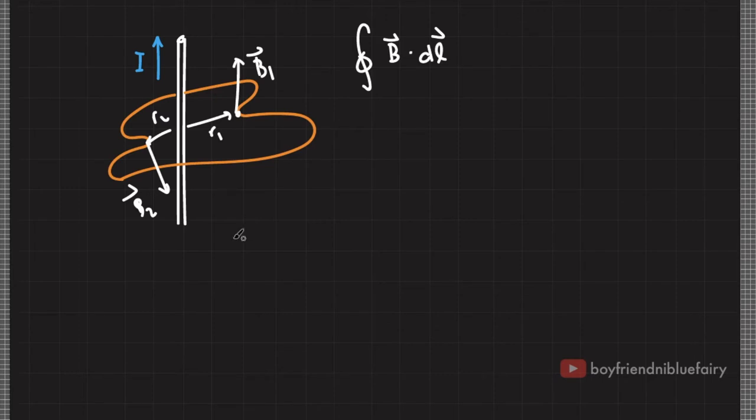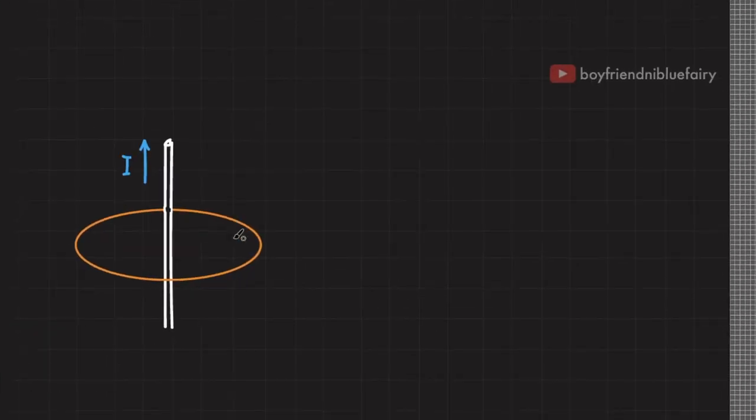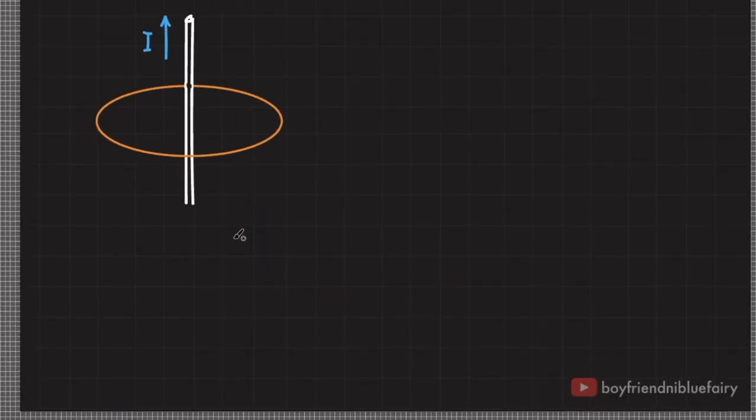Let's consider an integration path that is symmetric with respect to the source. Now, when I calculate the integral of B dotted to dL and I have a closed path, I can now take out B out of the integral sign because B is the same or constant along any point along this integration path.